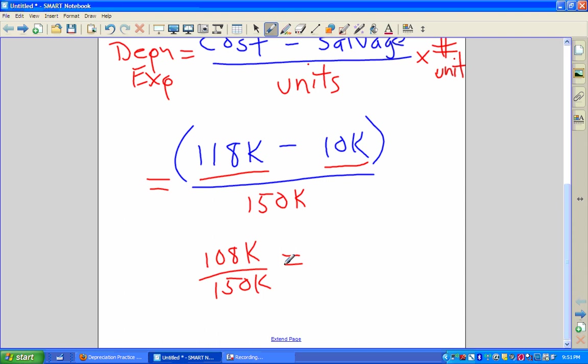And so when I go 108k divided by 150, I get 0.72. The thousands don't even matter. I get 0.72. And what is this in? These were in dollars. This was in miles. So this is dollars per mile is what our units are in. You got to remember that. Dollars per mile.